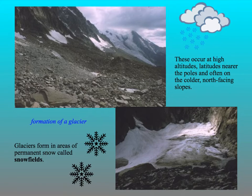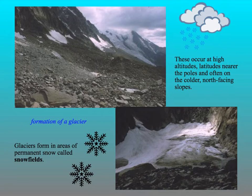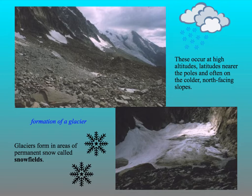Snowfields occur at high altitudes due to the lapse rate, so for every 100 metres higher you go, the temperature decreases by 0.6 degrees Celsius. It also happens in northern latitudes, closer to the poles, as those from National 5 know, that affects weather and makes it colder. And north-facing slopes, because they don't get any direct sunlight — that's why if you're buying a house, most people would like a south-facing garden so they can top up a tan.